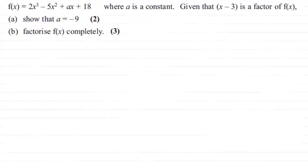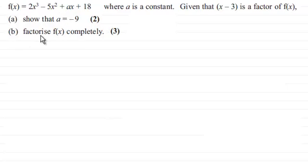Hi. In the first part of this question I showed you how we went about showing that a equals minus 9 in f of x. Now for the next part we've got to factorize f of x completely, and we already know that x minus 3 is a factor of f of x.